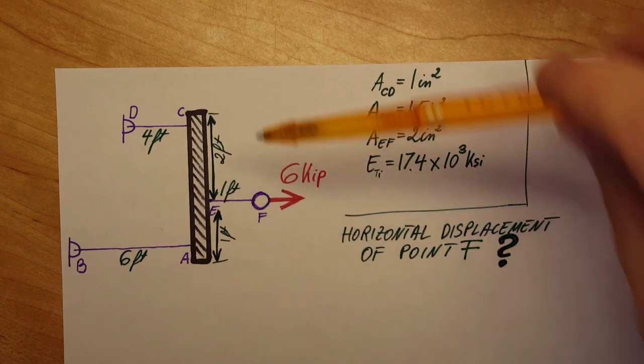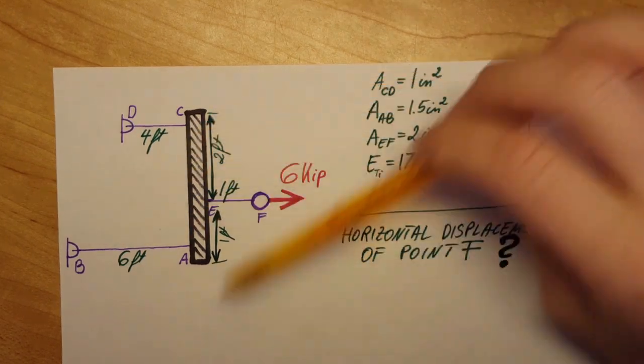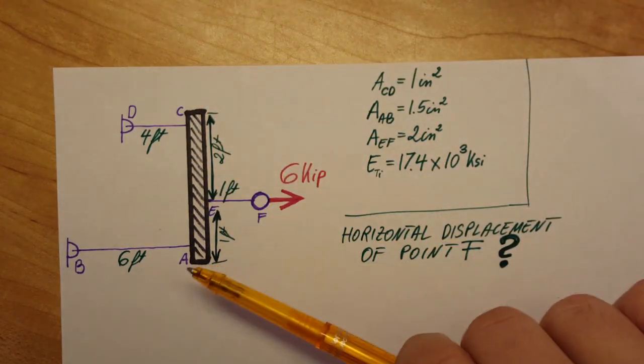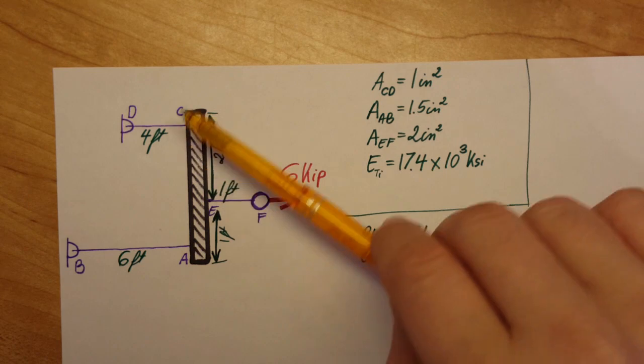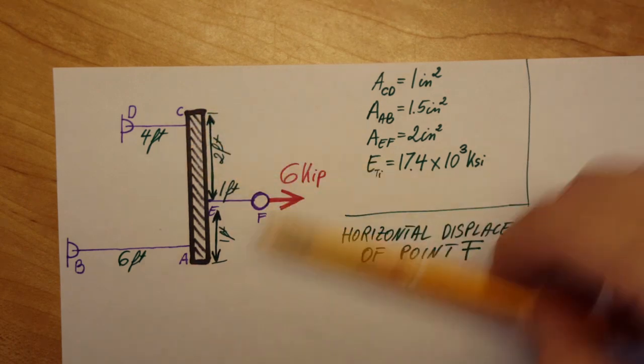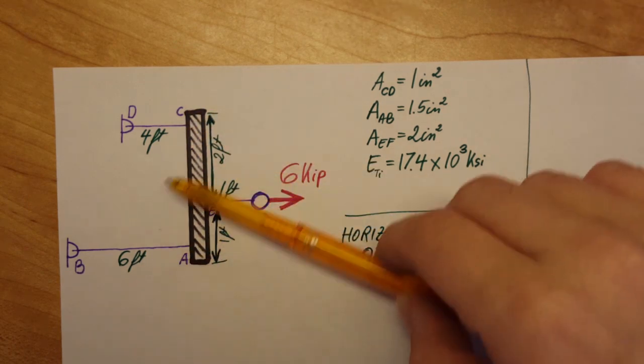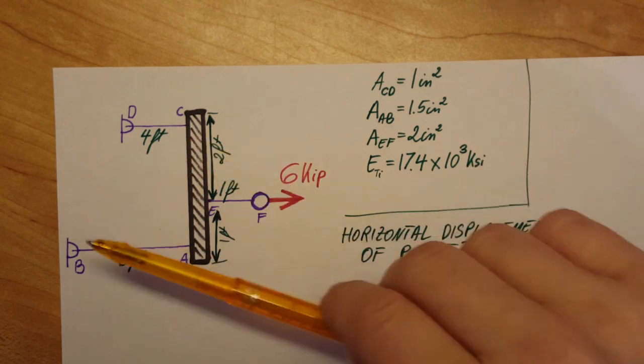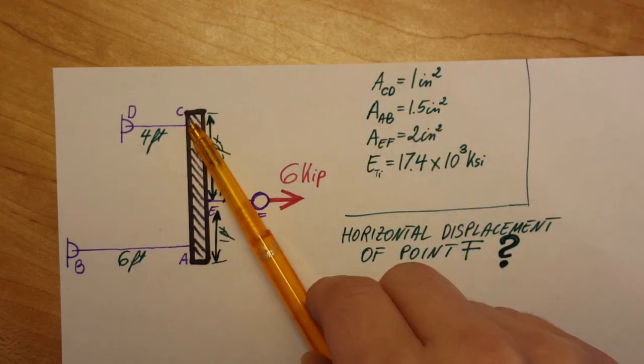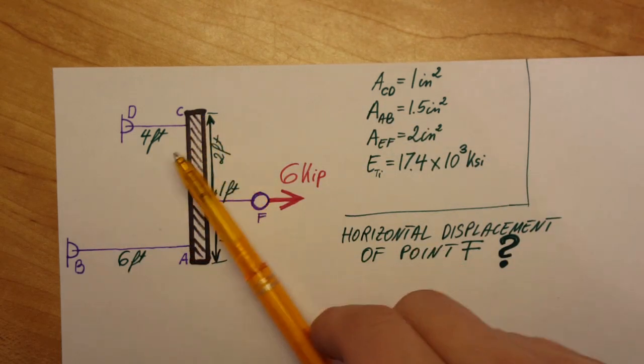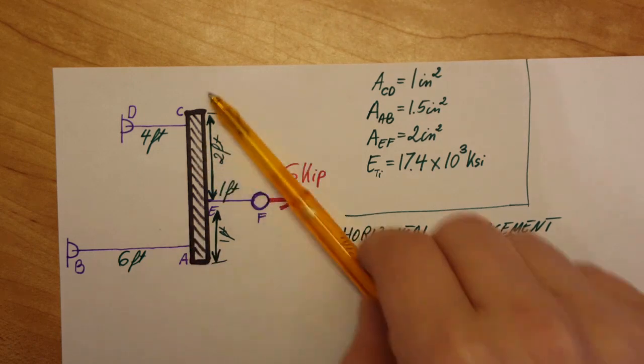Well, one word is very important in this description, and that is that rod AC is rigid. So whatever happens here with these three bars will not affect the shape of AC. It'll not bend or deform in any way. It'll stay the same shape.